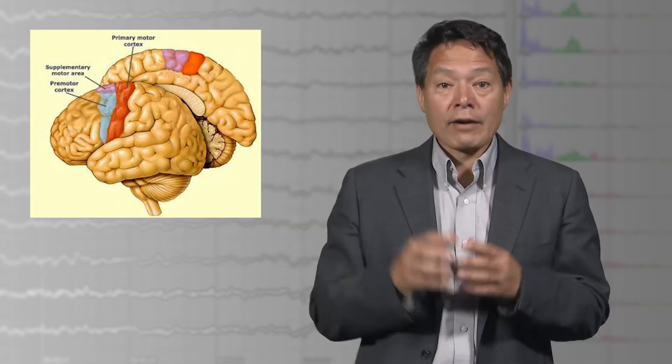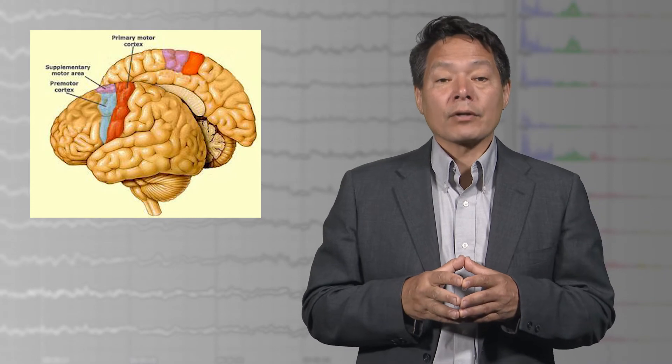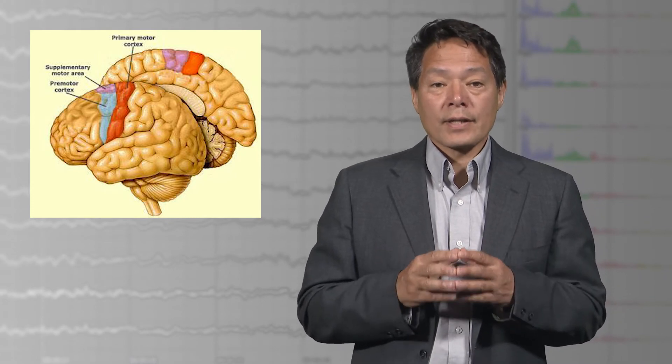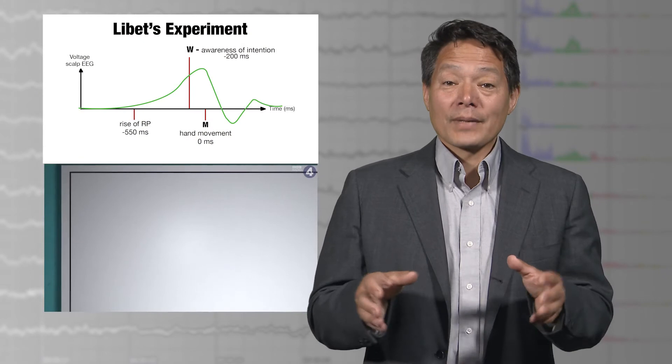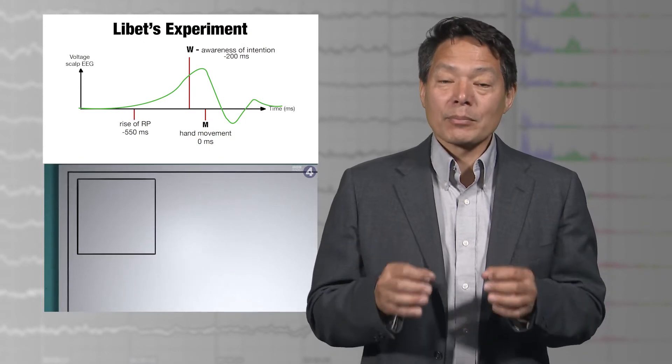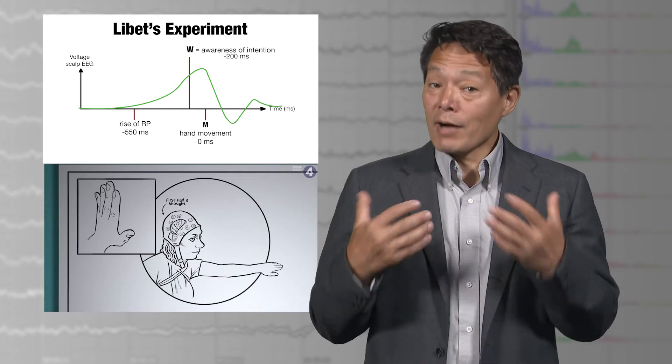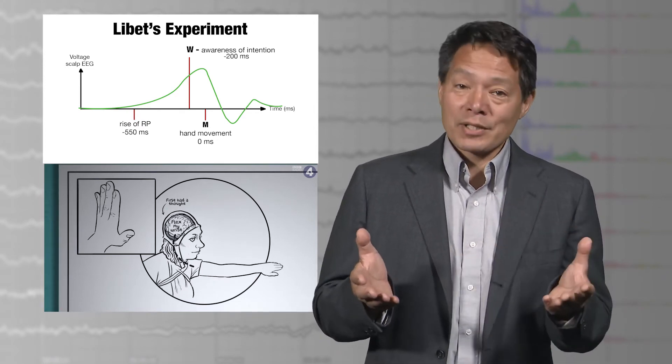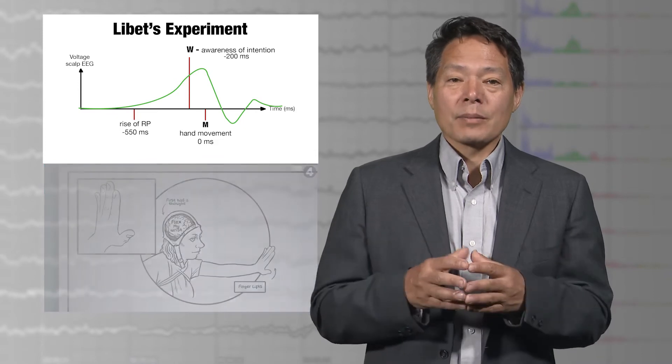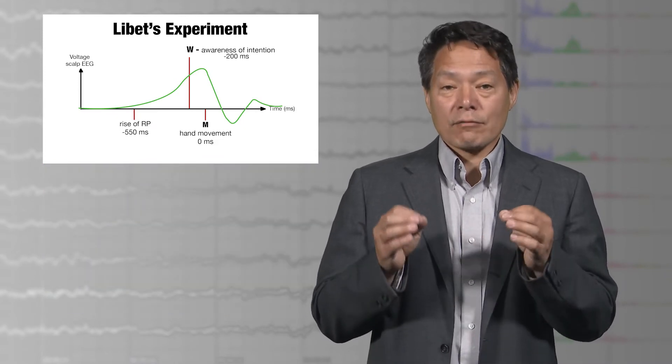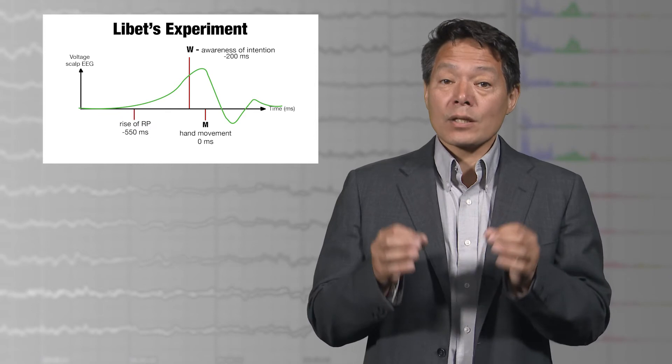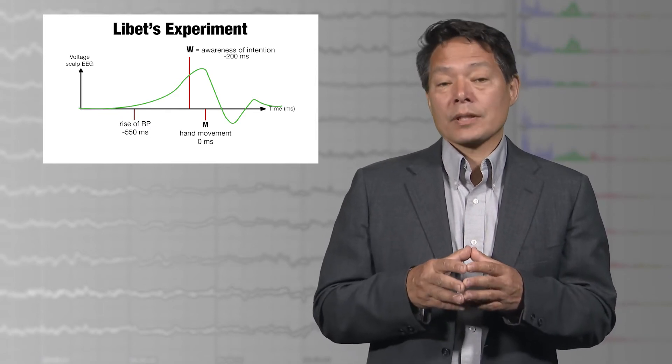The readiness potential is a slowly rising change in potential or voltage that is strongest right about here, right above an area known as the supplementary motor area that is thought to be involved in the planning of motoric movements. Well, it's not surprising that measurable brain activity precedes a volitional action. Because brain activity presumably causes that action, so it has to precede it. What was surprising to many people was that the beginning of the readiness potential also precedes the conscious awareness of willing a movement to occur.